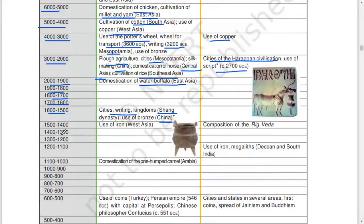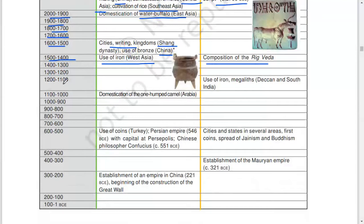1,500 to 1,400: use of iron, West Asia. Composition of Rig Veda. 1,400 to 1,300, 1,300 to 1,200, 1,200 to 1,100: use of iron, megaliths, Deccan and South India.